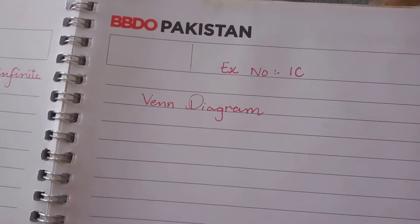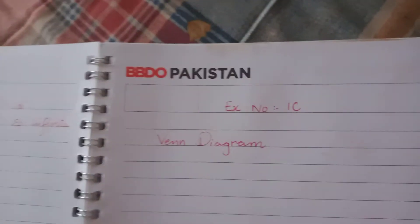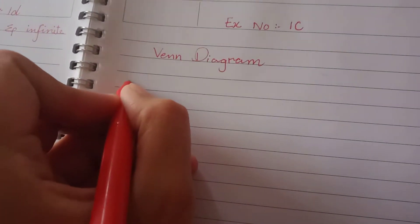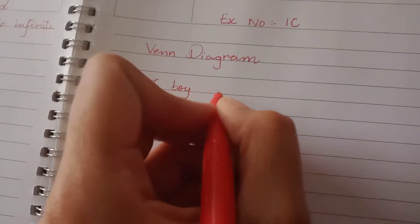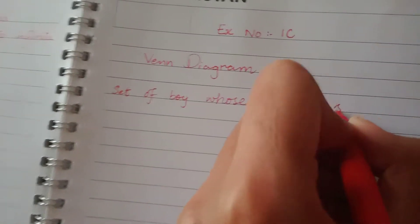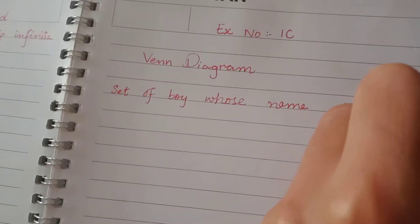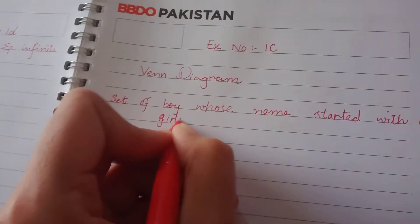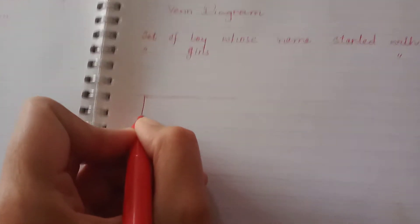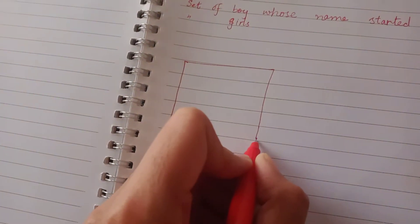In my introduction I will solve a problem. So friends, what is a Venn diagram? We have to draw a problem. Let's see — if you have a question that you have to make a diagram, for example the set of boys and the set of girls whose names start with A. Then we have to draw a box and circles for boys and girls.